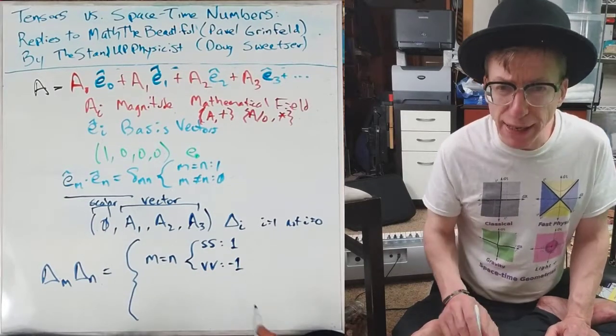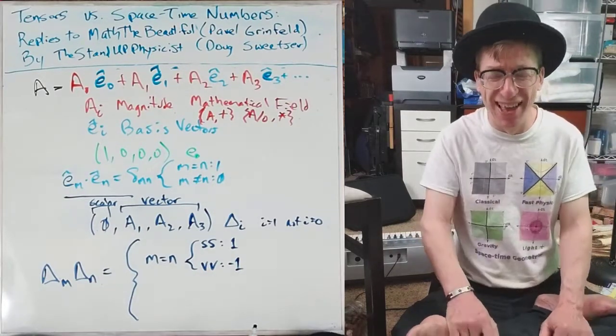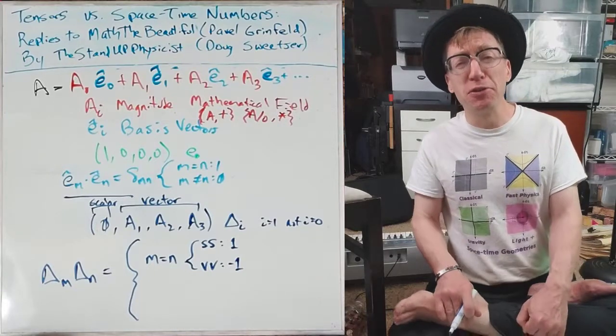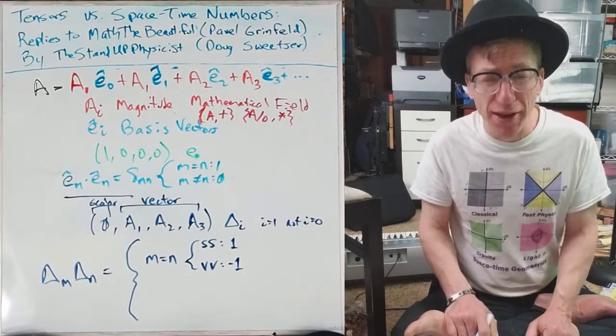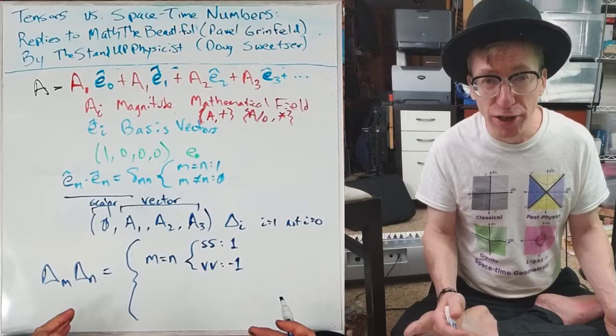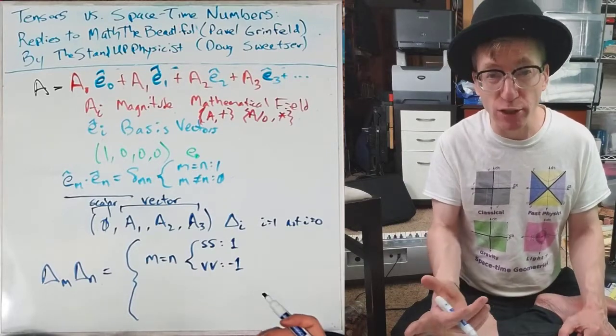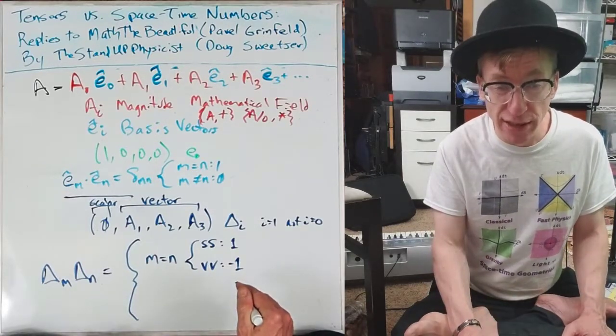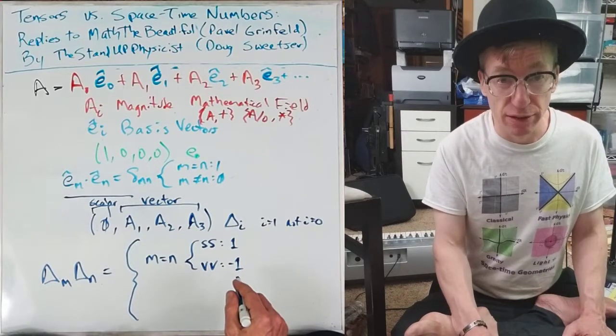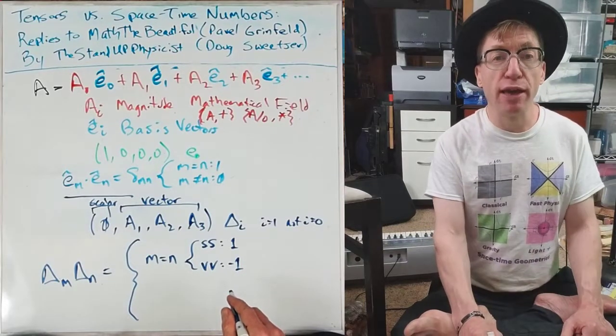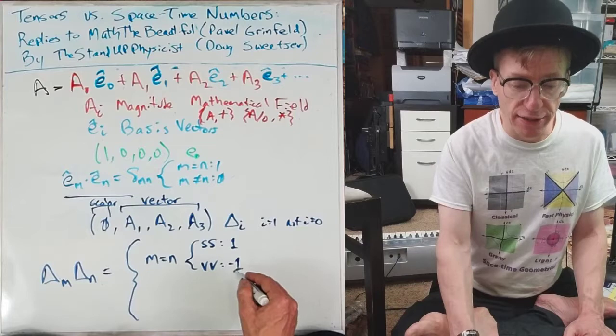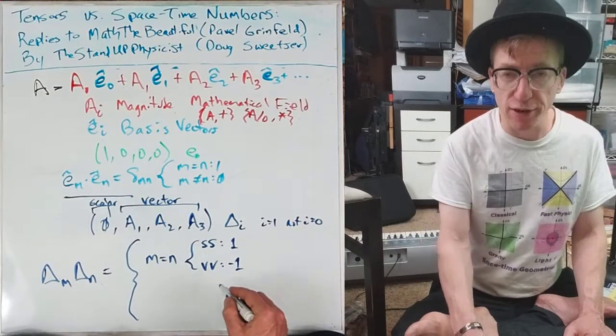Now, why did that minus sign come in there? Well, we'd need to introduce you to number theory, to the complex plane. You know where i times i equals minus 1? That's not similar to this. That's exactly this. So we're using number theory to define this particular result.